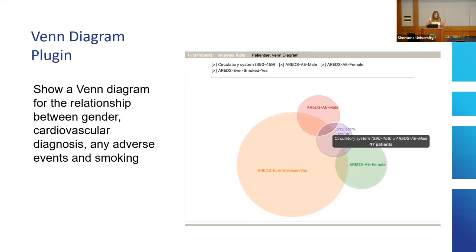I did this query where I grabbed all of the patients in the clinical trial who had ever smoked, moved them over to a patient set, then all the male patients with adverse events, and all the female patients with adverse events. One interesting finding is that although there are more females, you have more males who had any kind of circulatory system diagnosis. It basically shows how you can use i2b2 to do research that you could publish or follow up on.